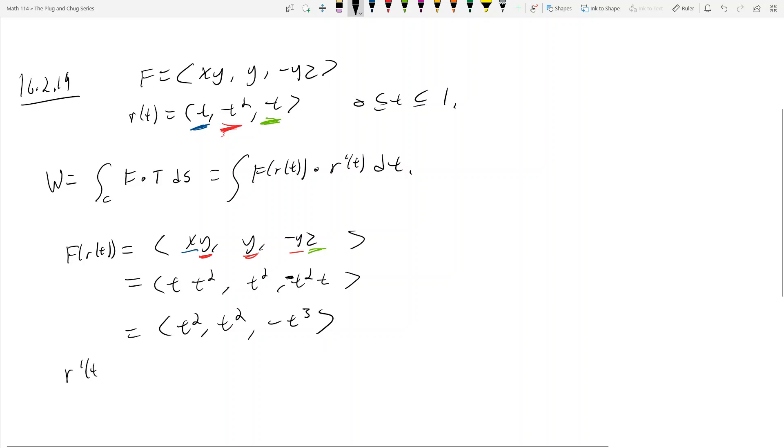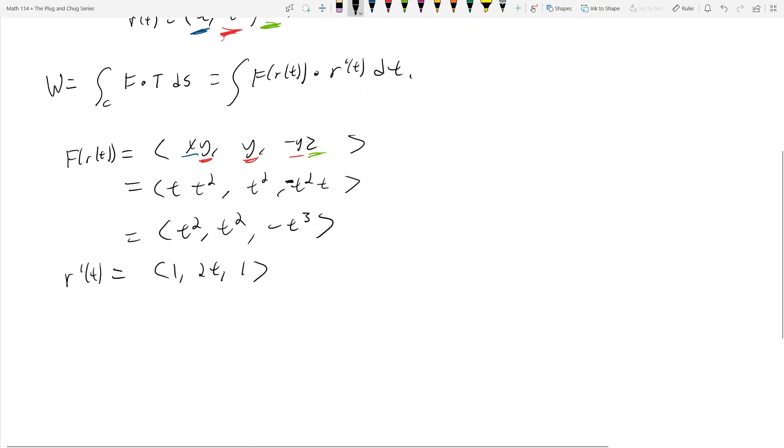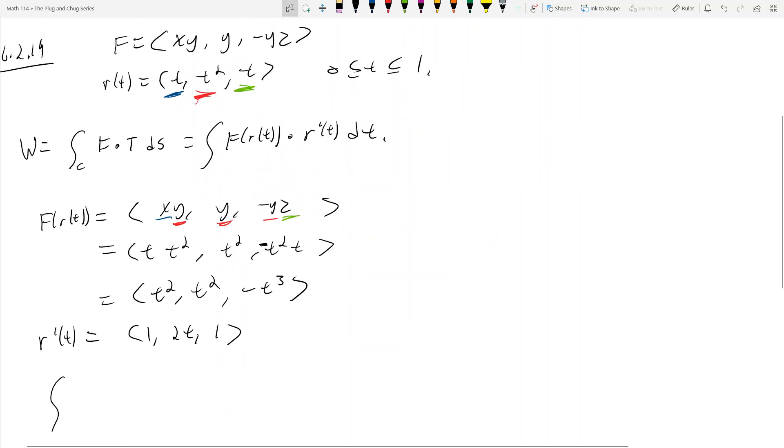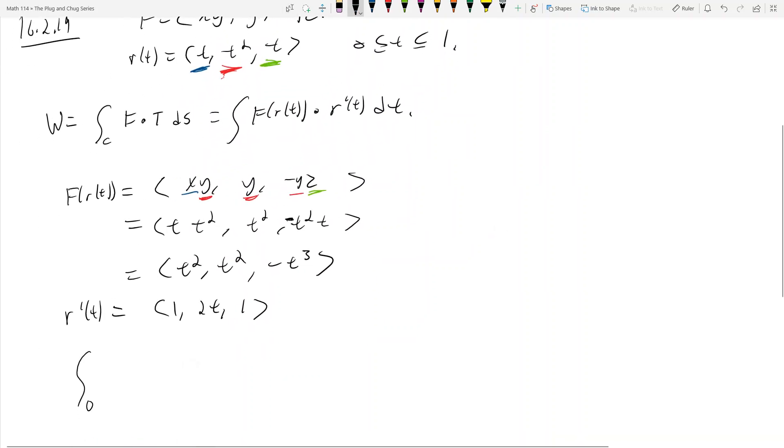And so z was a positive t here. Oh, I missed a t squared here as well. So this is really t cubed, t squared, and then there's a negative sign here. So negative t cubed. Now, r prime of t, this is easy, right? You just take r of t, you take derivatives. So you got 1, 2t, 1. And then now we take the integral, alright? And we have our t interval from 0 to 1. It's going to be an interval then of integral from F of r of t, which is t cubed, t squared, negative t cubed, dotted with 1, 2t, 1 dt.